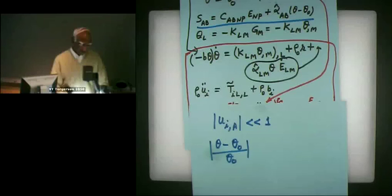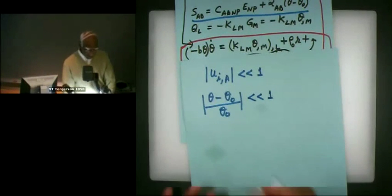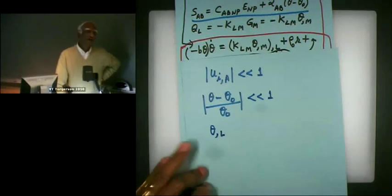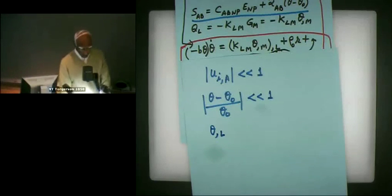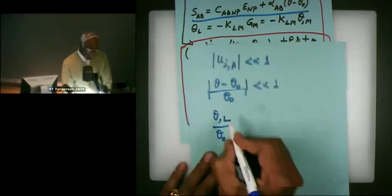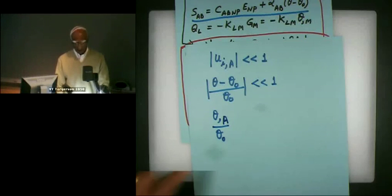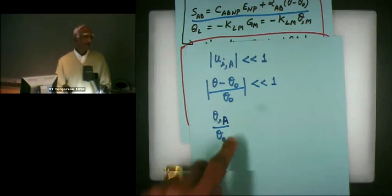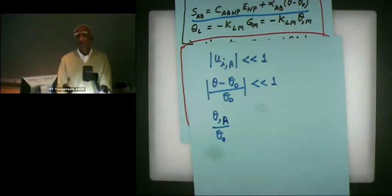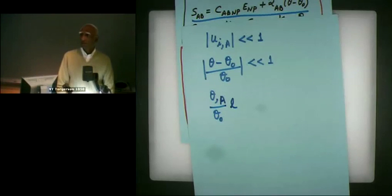Depending upon how much the temperature changes, if you can make the assumption that the temperature change is small — not only that, but the temperature gradient. Now this is not a non-dimensional quantity. To make it non-dimensional, divide by temperature and multiply by some length parameter — some typical length in the problem, which could be the length of the body, its width, or its thickness. So this is much, much less than one.